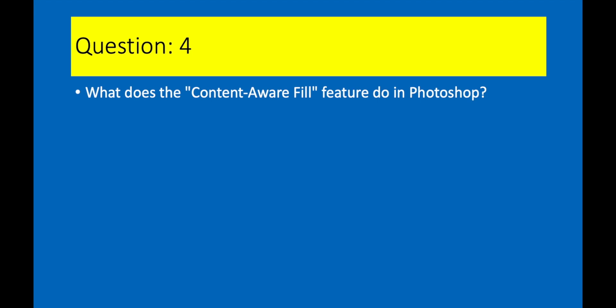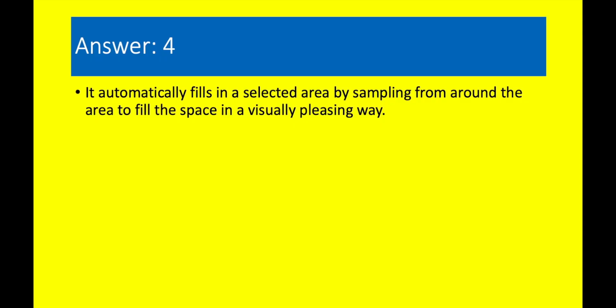Question 4. What does the content-aware fill feature do in Photoshop? Answer 4. It automatically fills in a selected area by sampling from around the area to fill the space in a visually pleasing way.